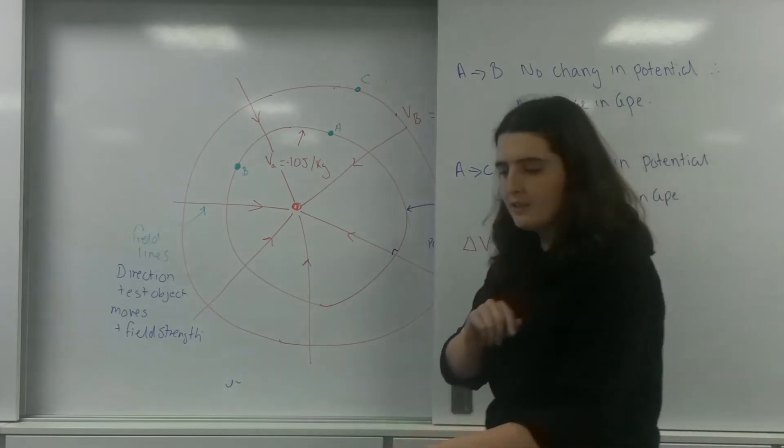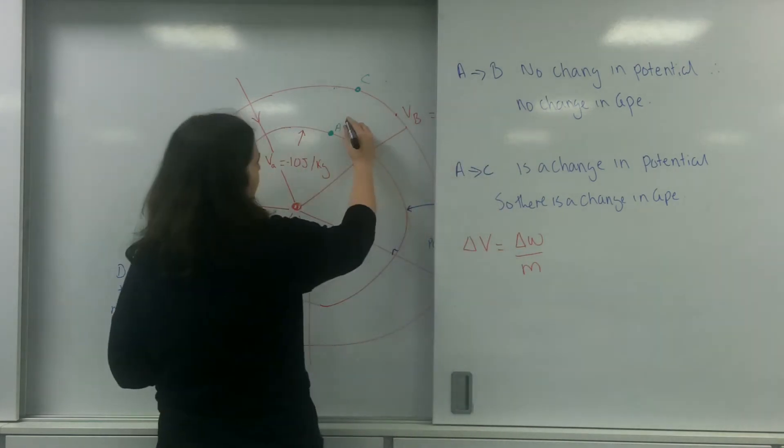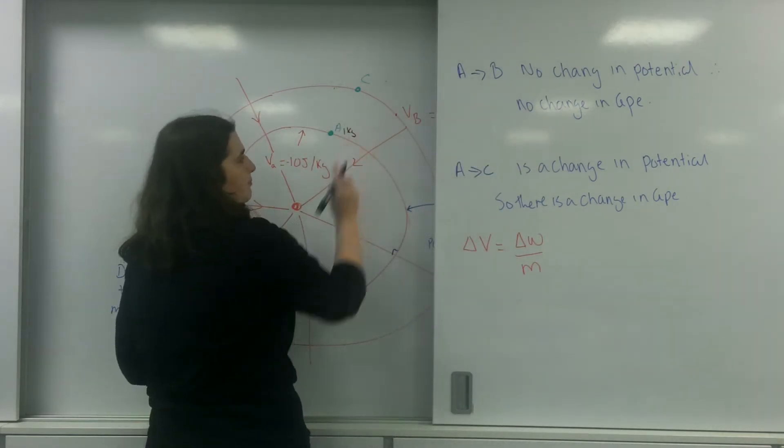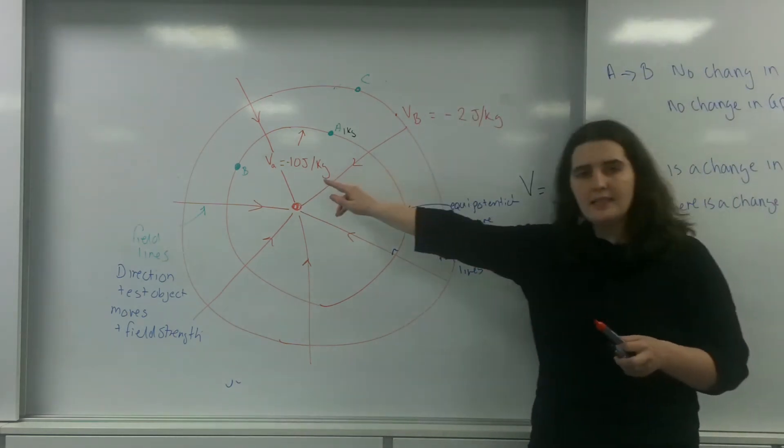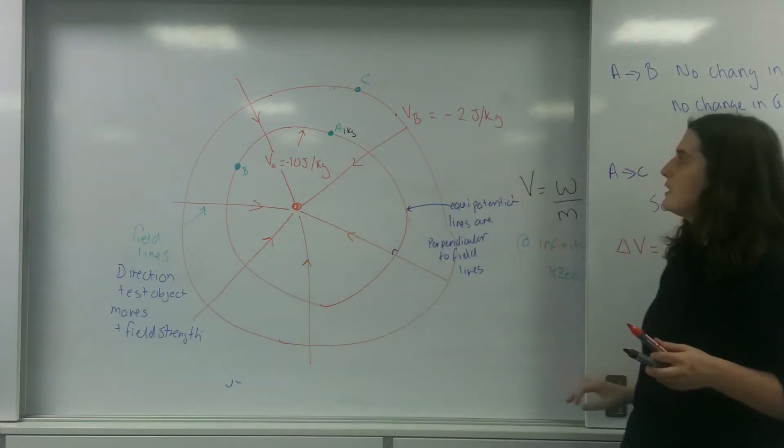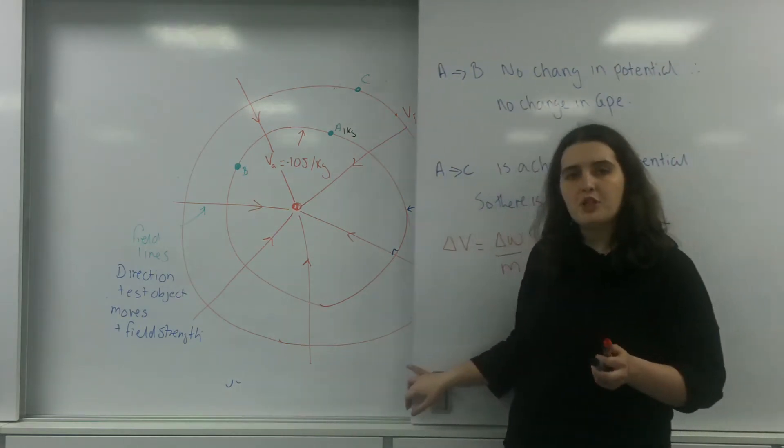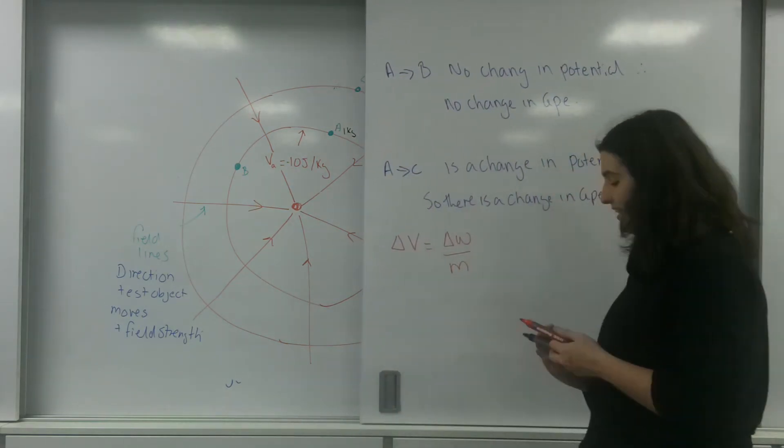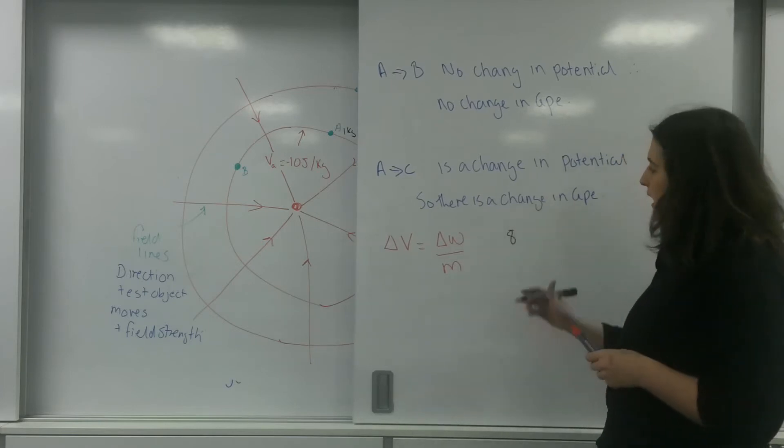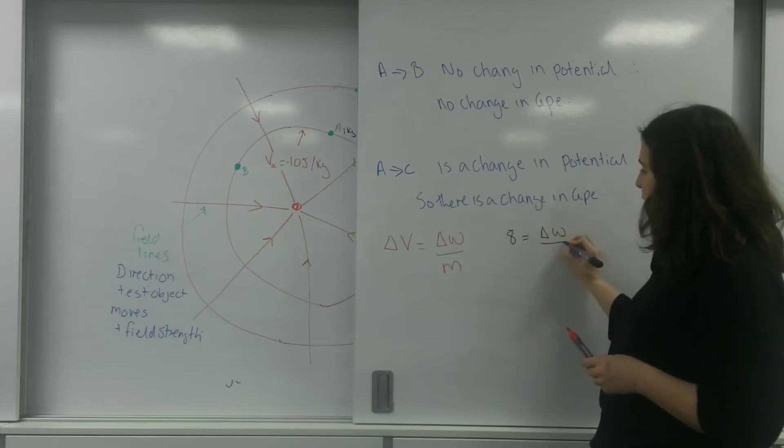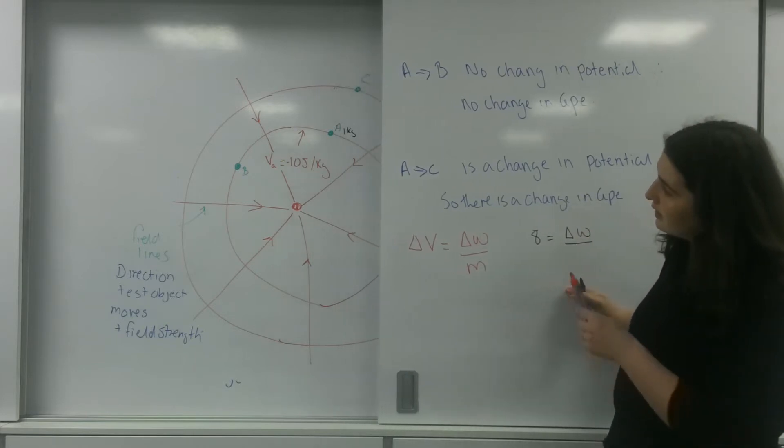So, let's say this object is 1 kilogram. My change in potential is going from minus 10 to minus 2. So, my change in potential is 8. And that equals my change in energy over my mass, which is 1 kilogram.